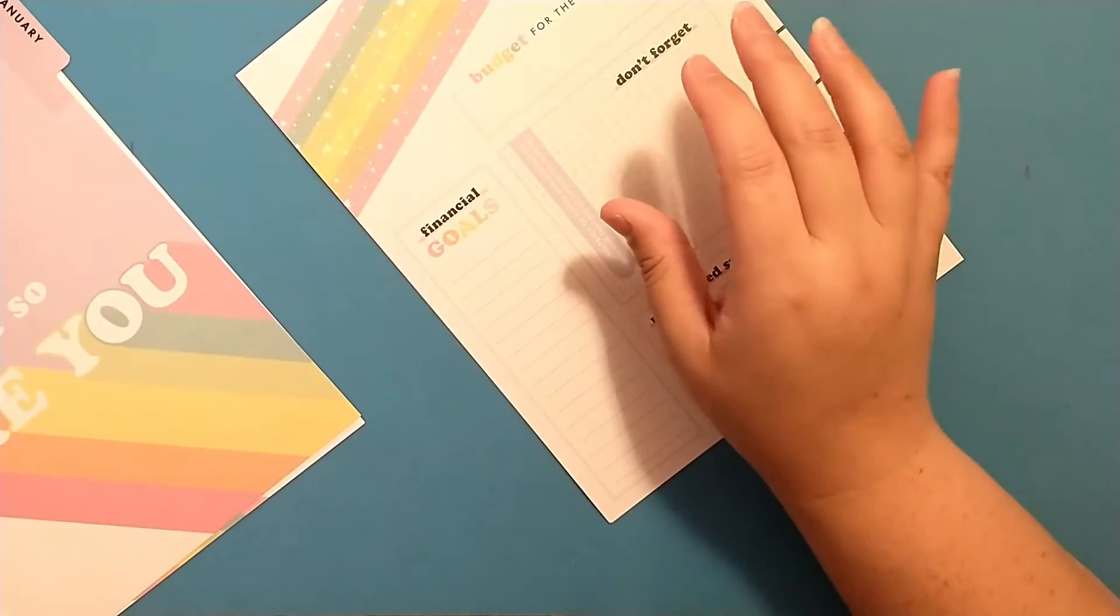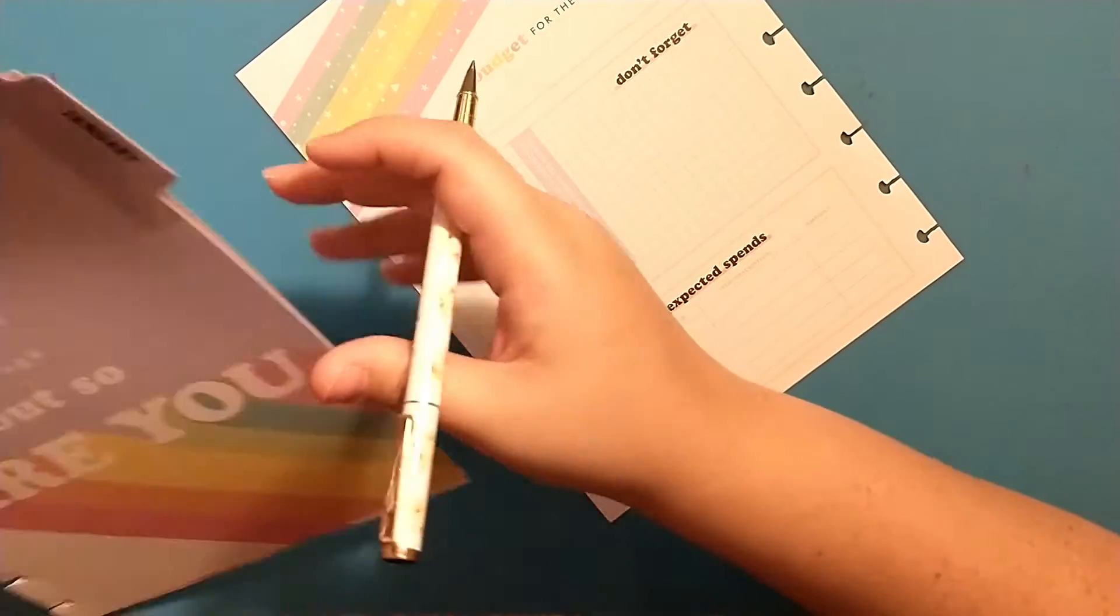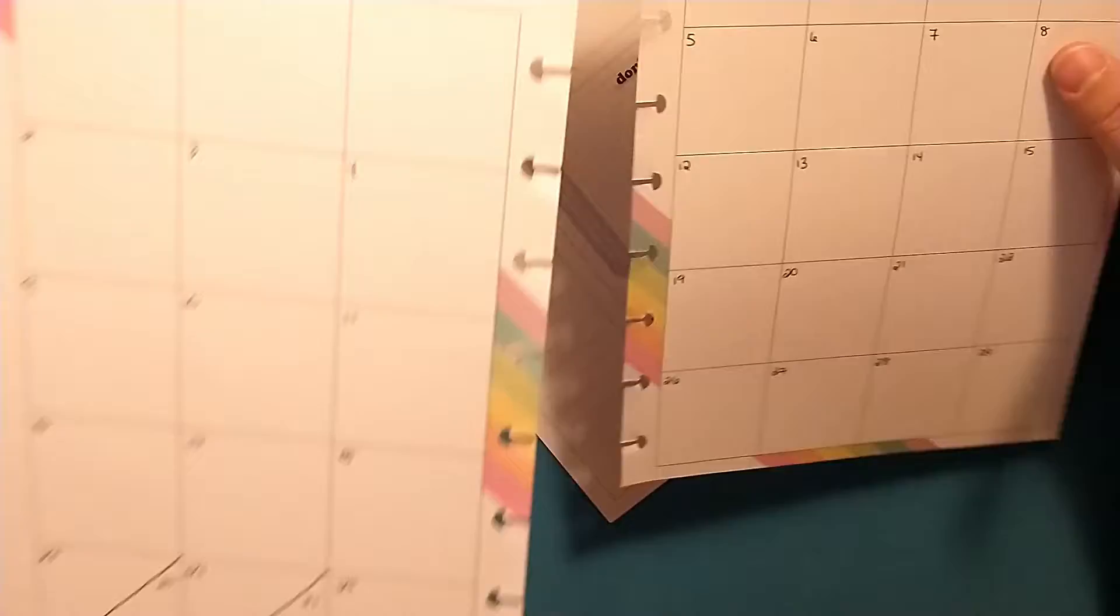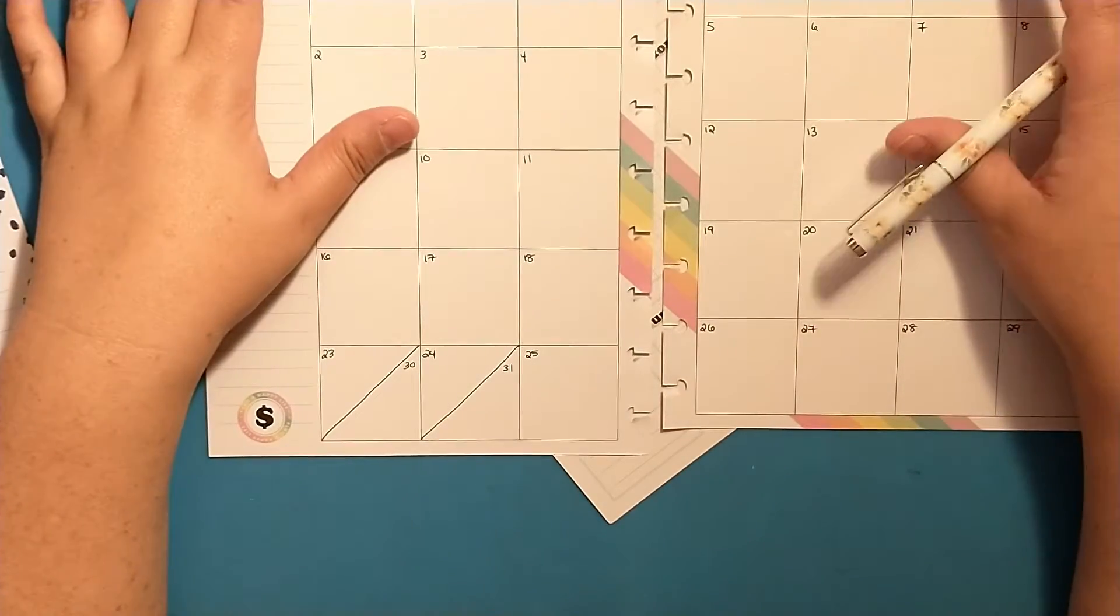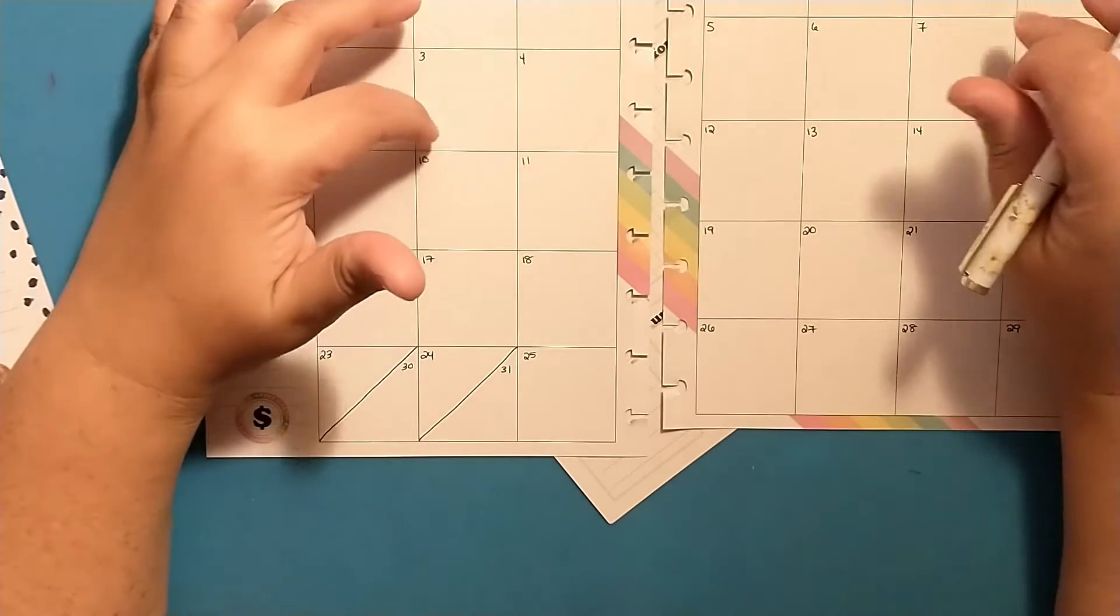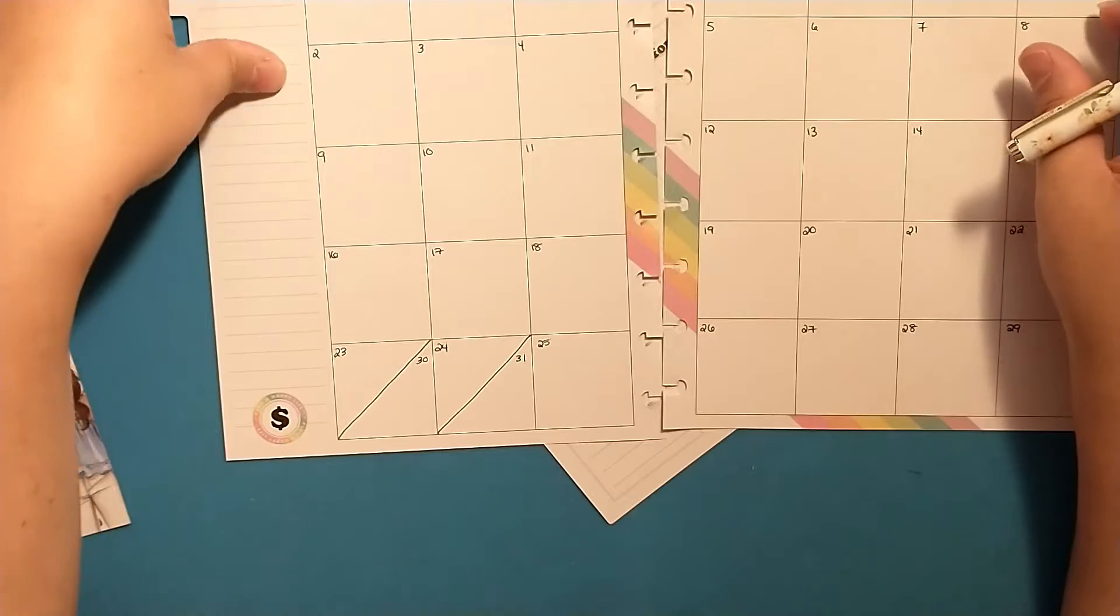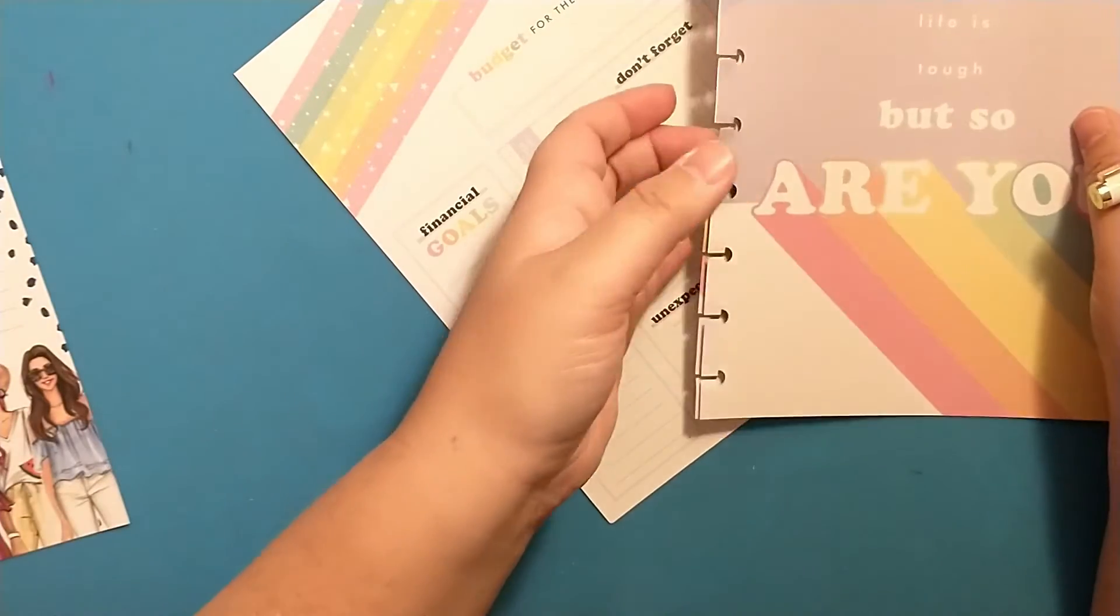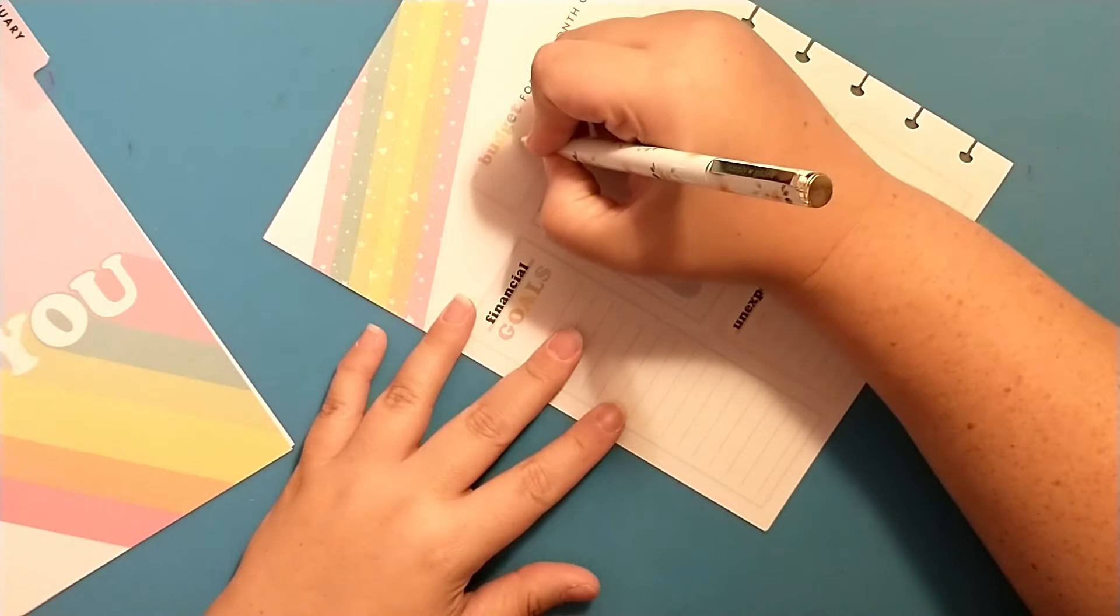First I want to date the month. This is a non-dated monthly budget planner and I did a setup video of this in an earlier video, so I just date these myself. I'm going to write January here.